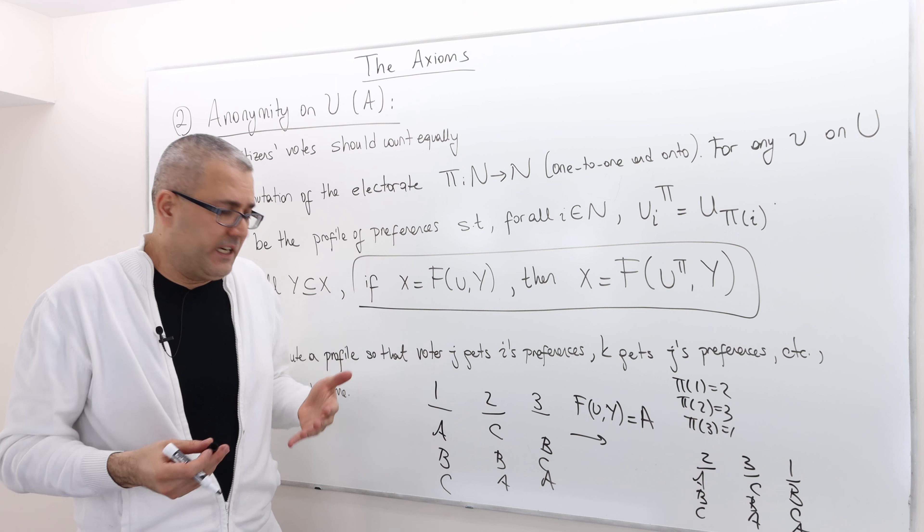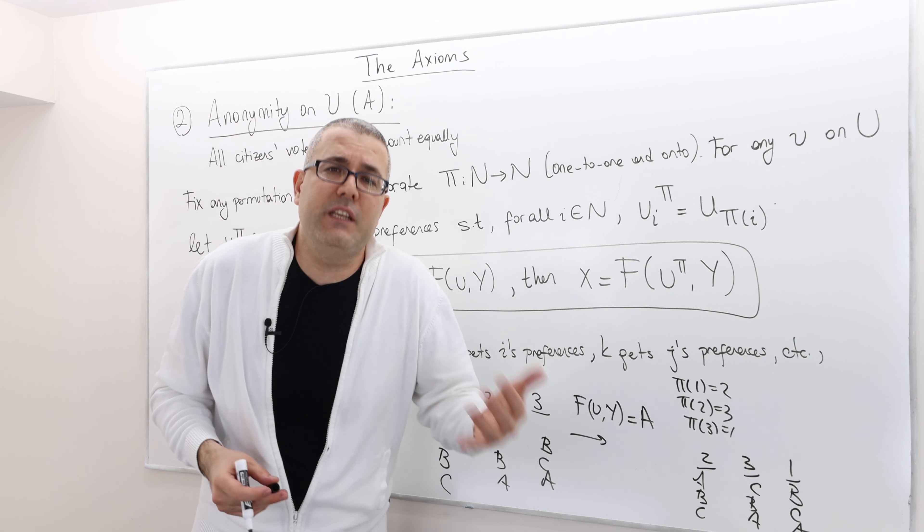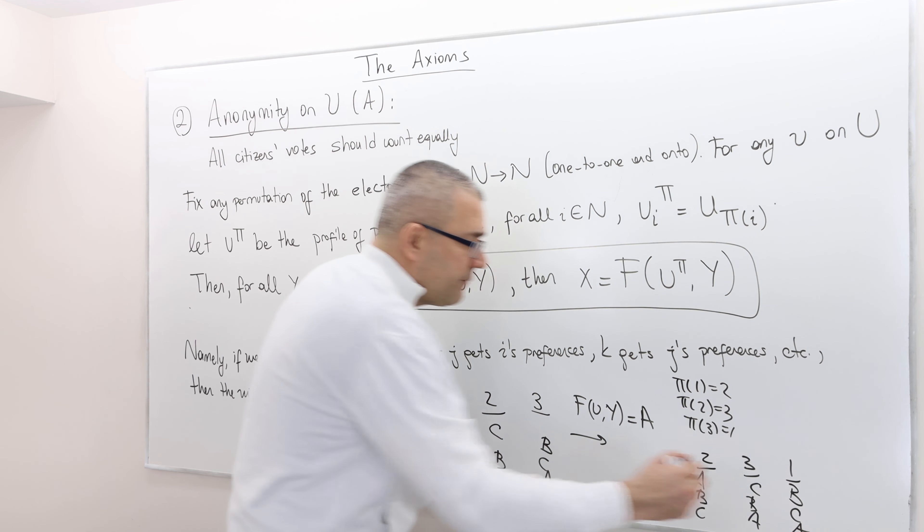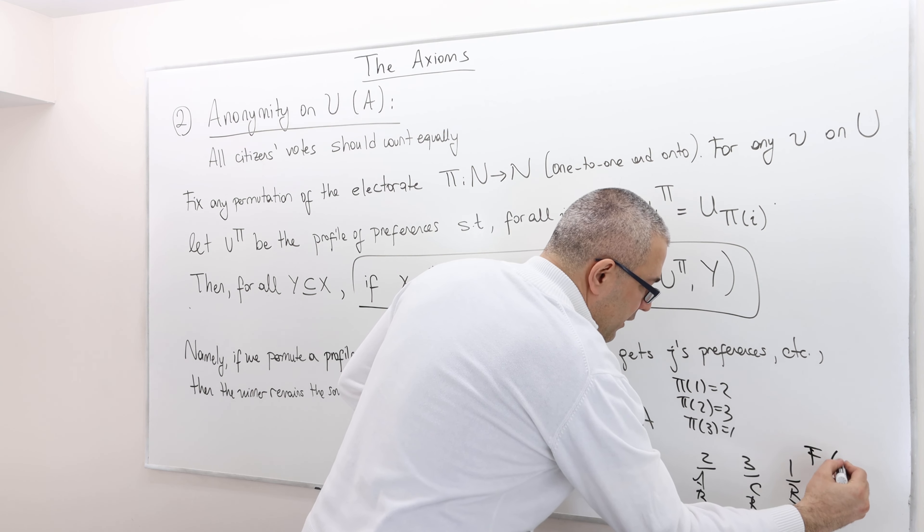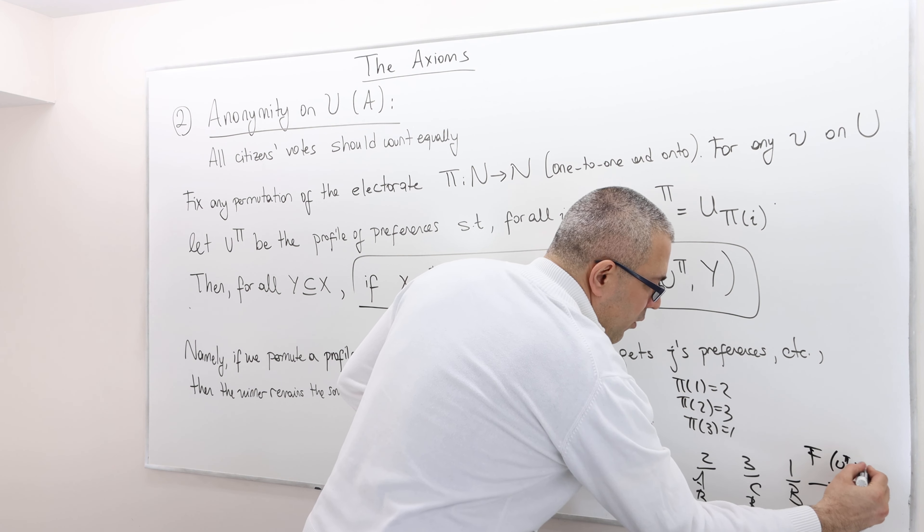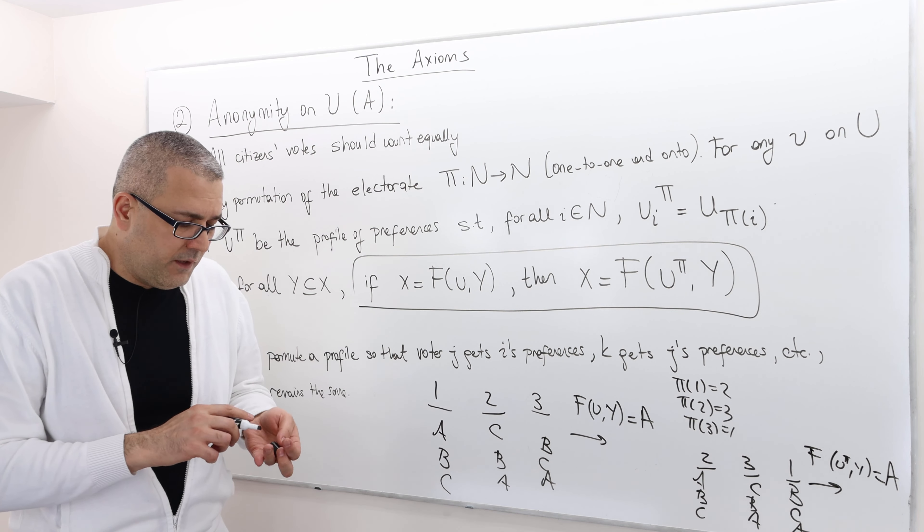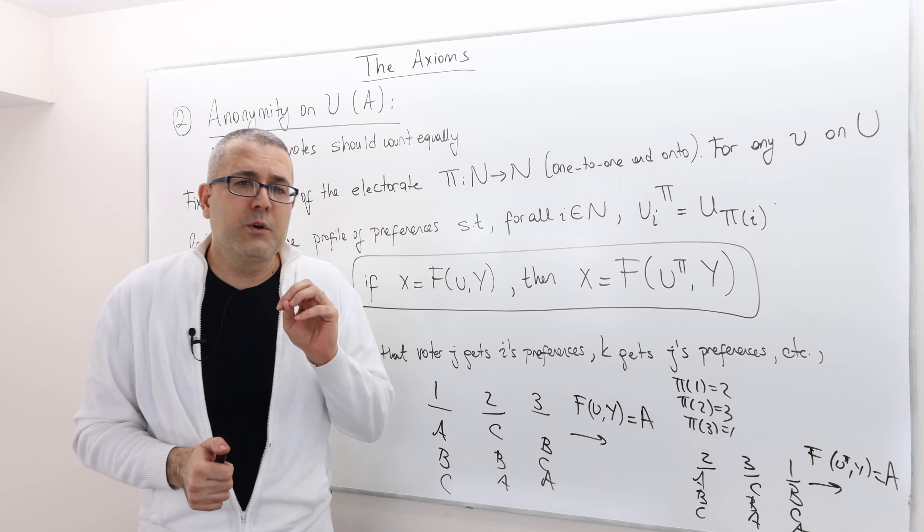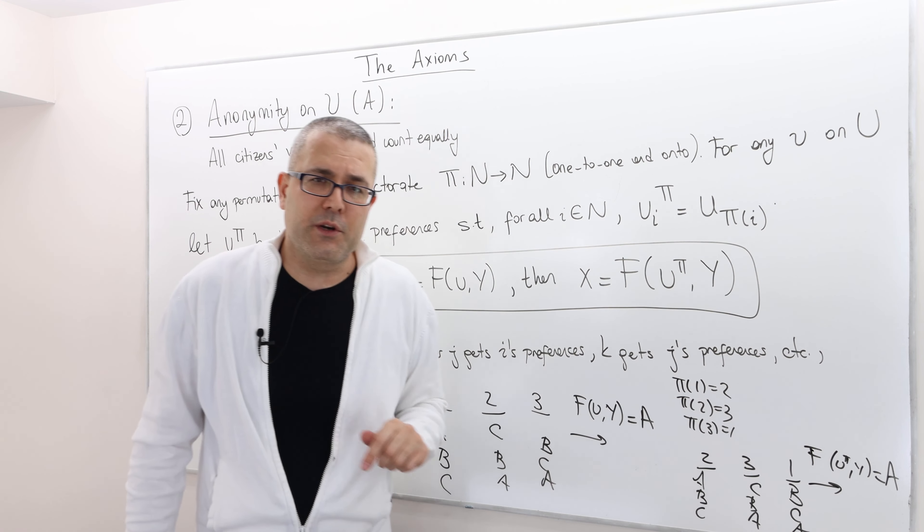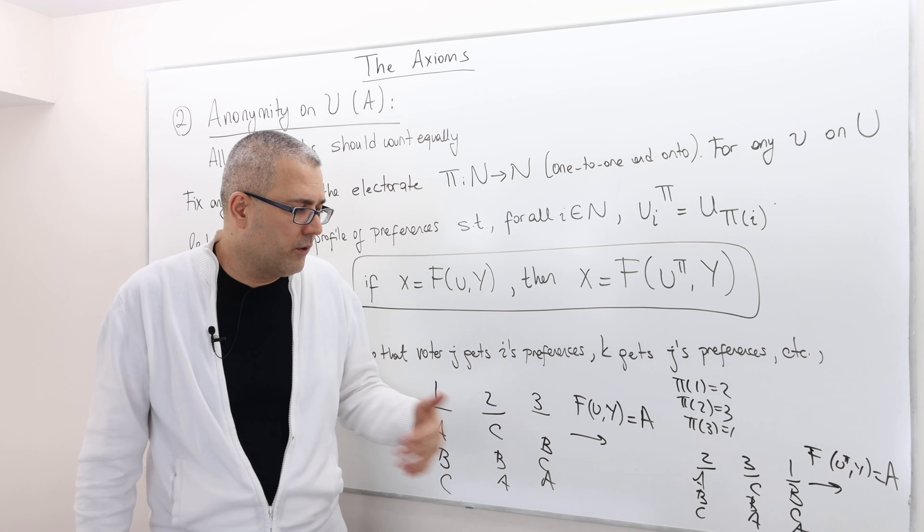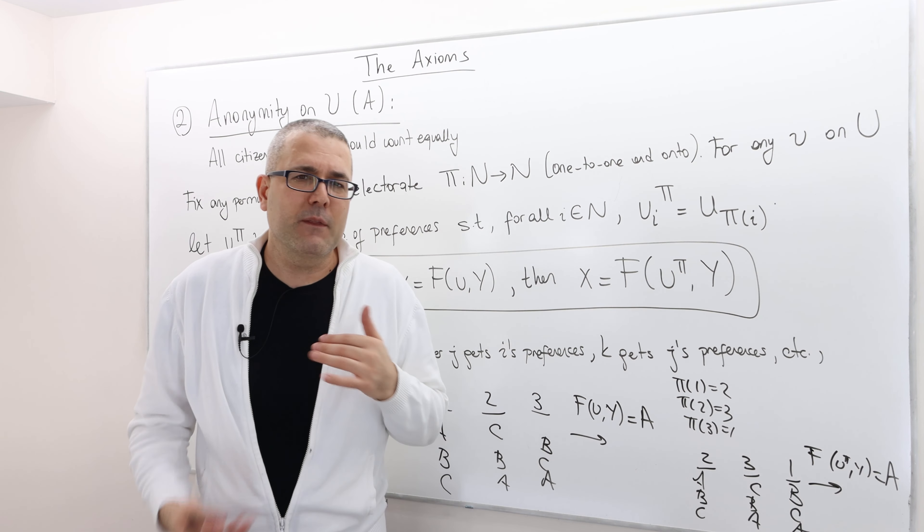player one declares a to b, b to c, but here player two declares it. Well, the thing is the F under this u pi Y should still be a. So the voting rule shouldn't be focusing on the name of the voters. It should be focusing on the candidates only.